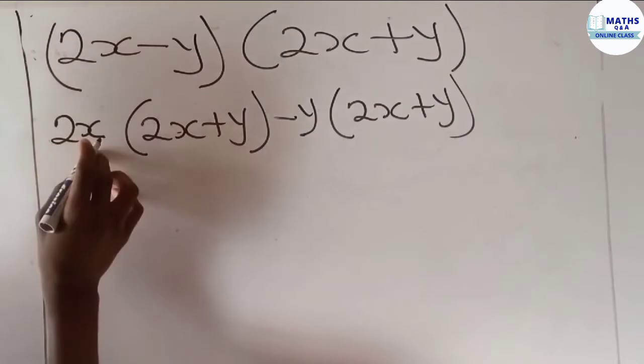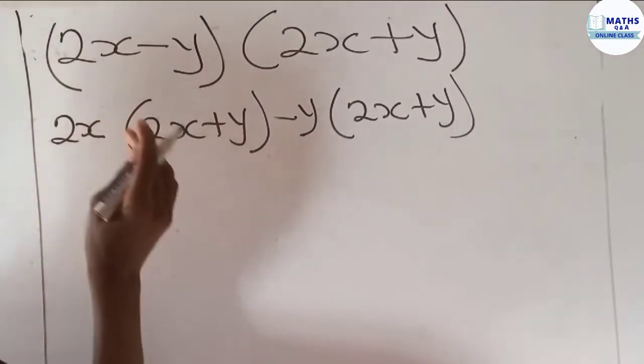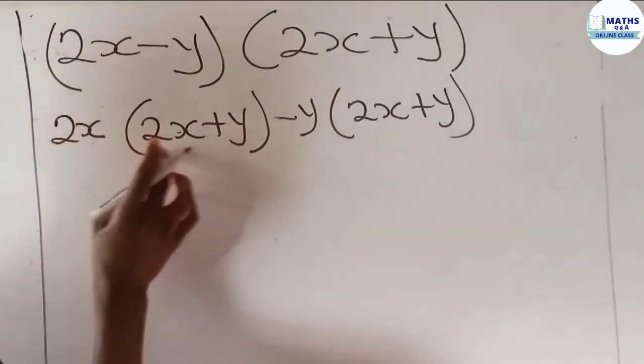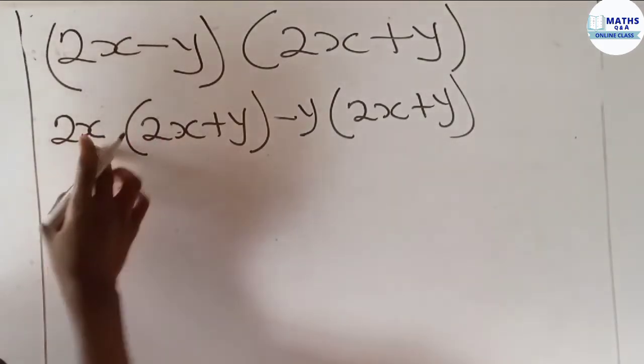So 2x multiply 2x - number multiplies number, letter multiplies letter. So 2 by 2 gives 4, so 2x multiplying 2x gives 4x².